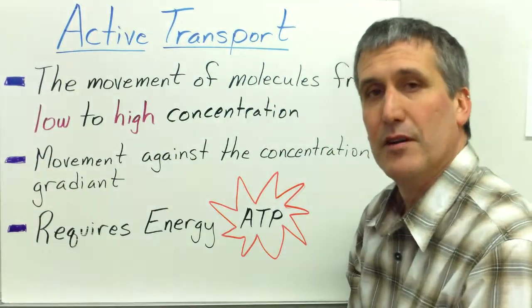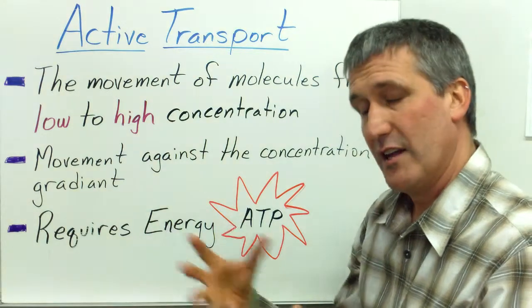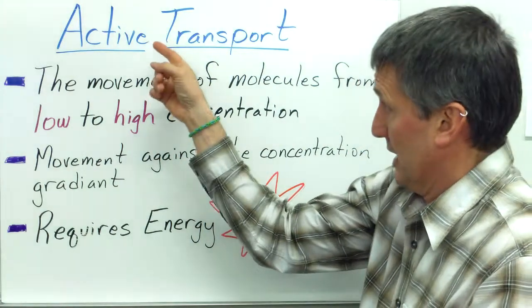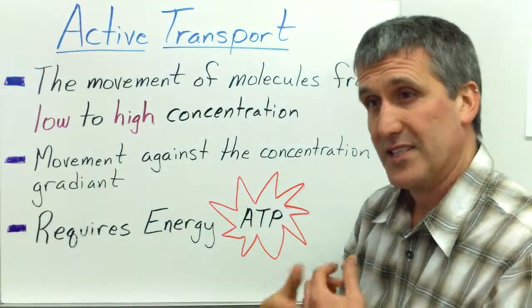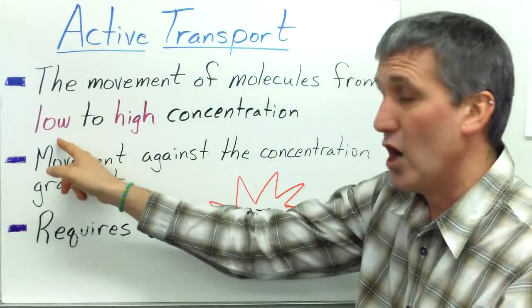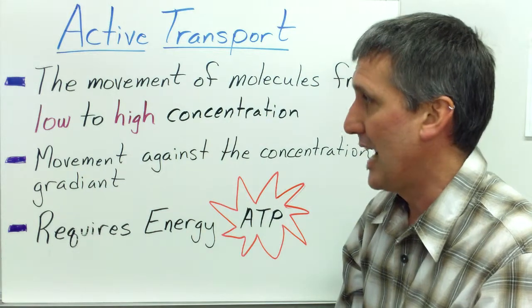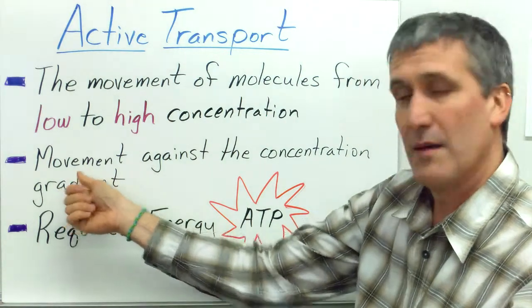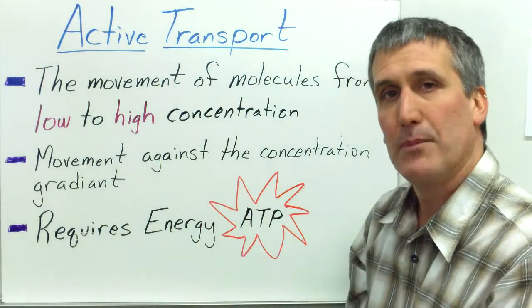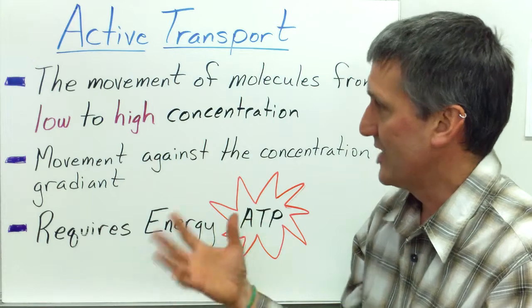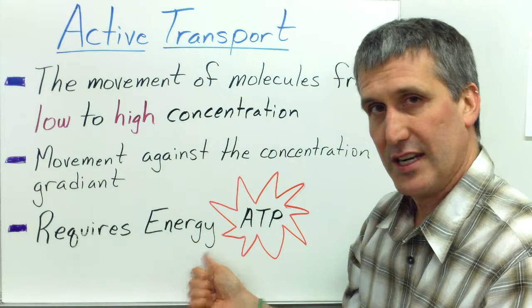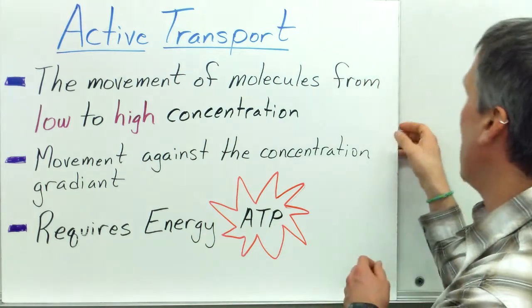Now the second main type of transport is active transport. So the cell takes advantage of diffusion and osmosis, but sometimes the cell needs to move molecules against the concentration gradient. So this is the movement of molecules from low to high, which is opposite of high to low. This is called moving against the concentration gradient. If you picture going up a hill or going up a stream against the current, that's a good way to picture active transport. And this does require energy. The cell needs to use ATP to make this happen.